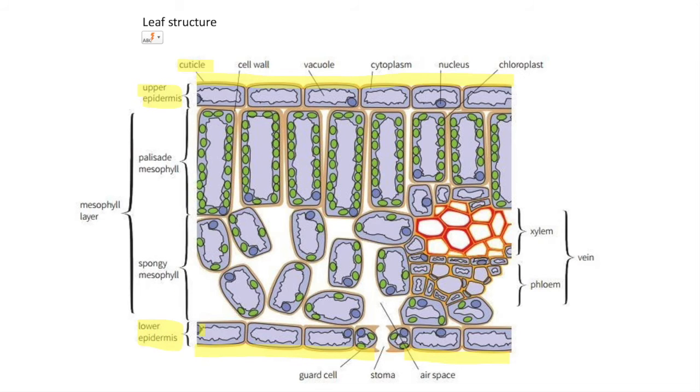It is also bounded by the top epidermal cell and bottom epidermal cell. Looking top down, there's this upper epidermis. There's the palisade mesophyll—they look like tall pillars of cells that are tightly packed. They have a lot of chloroplasts to trap the most light because it's on the top surface of the leaf.